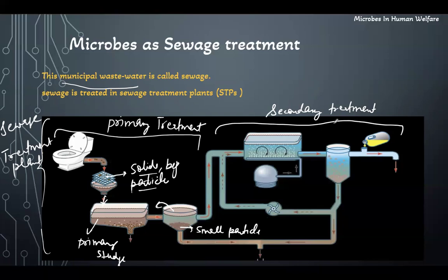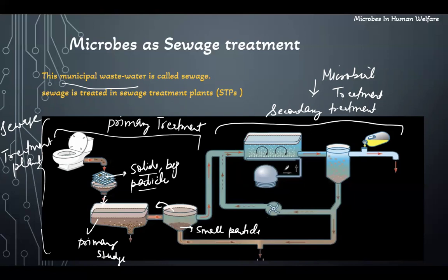Water then reaches the secondary treatment plant. Under secondary treatment, it is mostly based on microbial treatment. Various aerobic microbes are added here — some are already present in the water, some may be added. These are aerobic organisms and they require air, so air is sparged through this. Due to air sparging, there is proper intermixing of the water so that microbes can grow properly and degrade the organic matter.